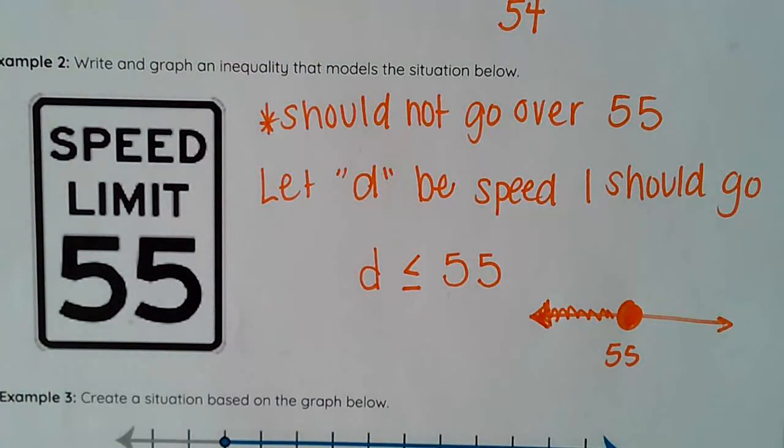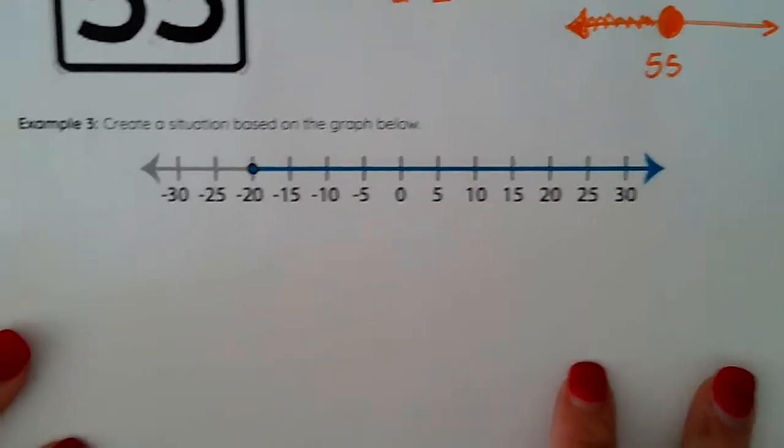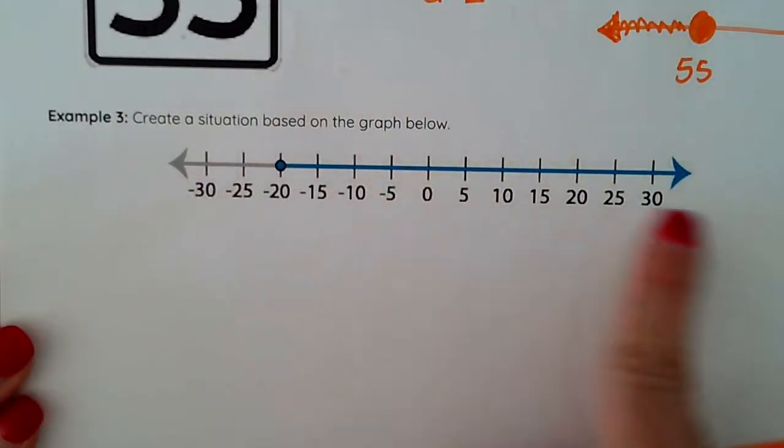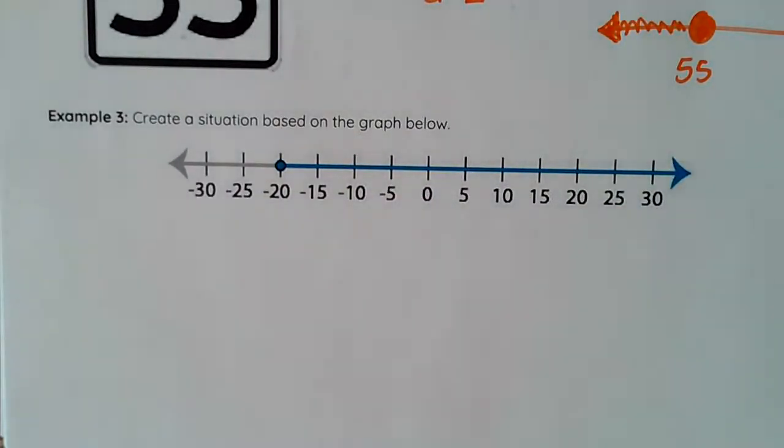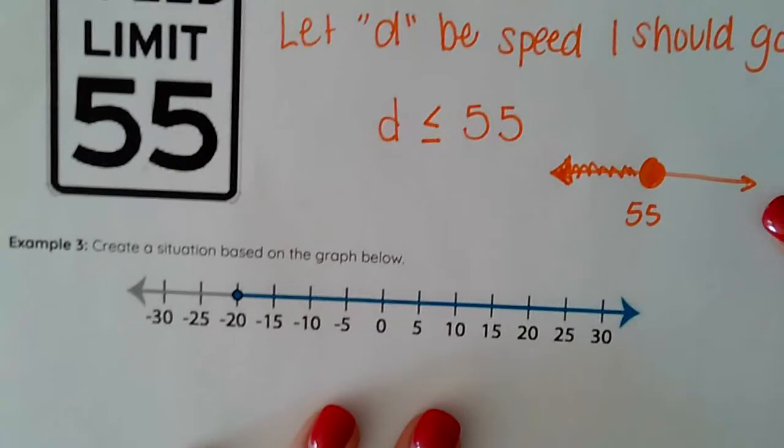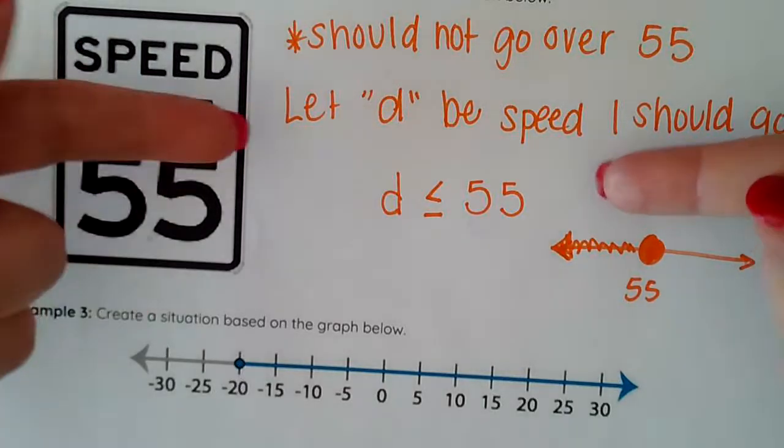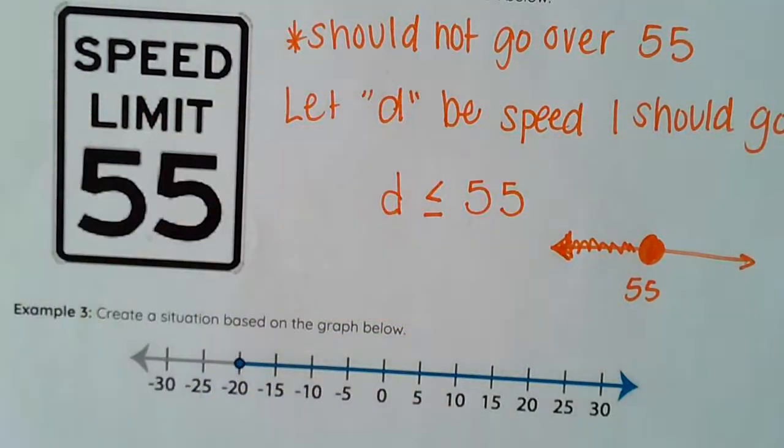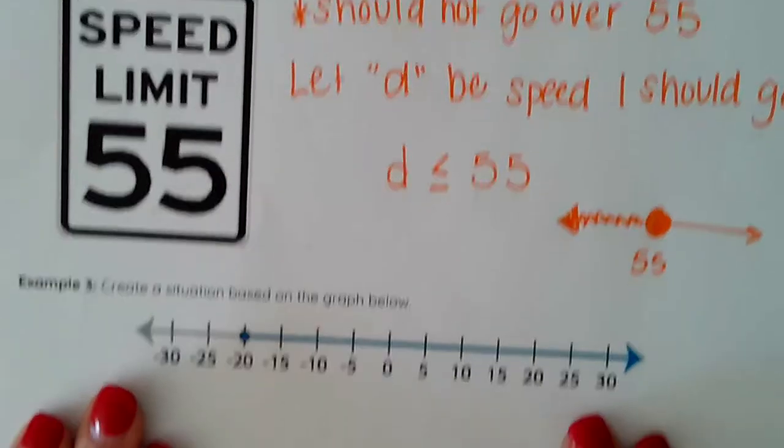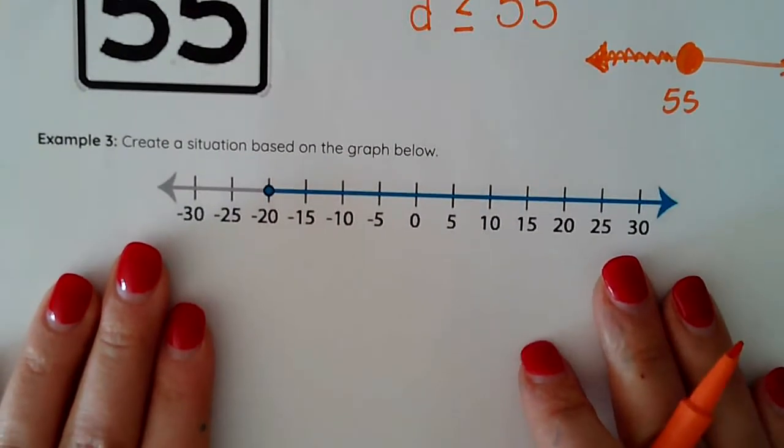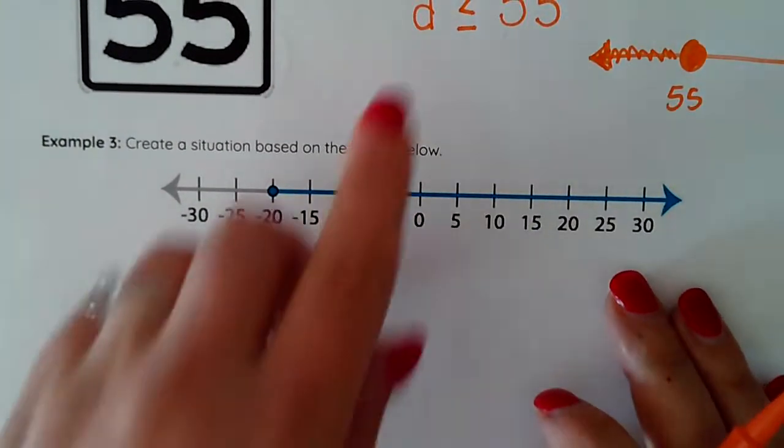I've got one more example here and that's actually taking it from a graph here and turning it into a situation. So the first thing I want to do is I actually want to just work backwards. Up here I started with my situation broke it down turned it into an inequality and then my graph. Now I have my graph so I want to go ahead and make next my inequality.